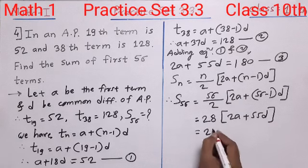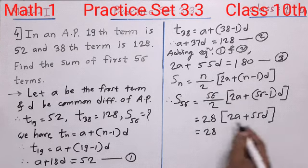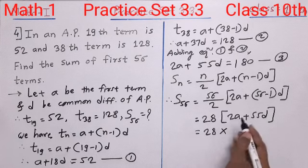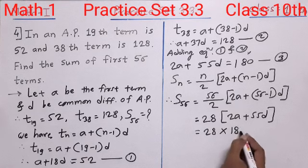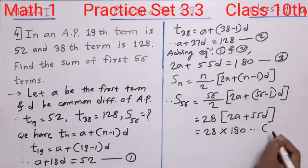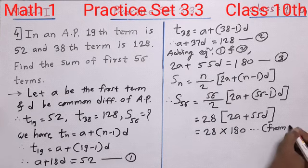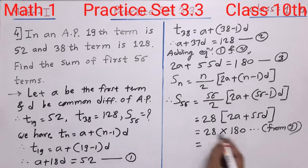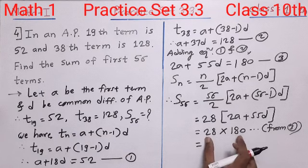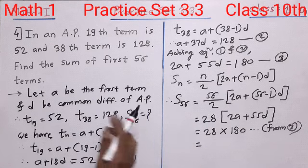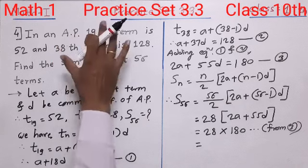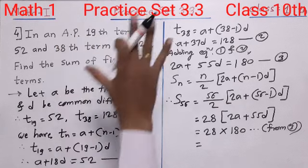28 will remain as is. The bracket is multiplied, so we write 28 multiplied by the value of 2A plus 55D. From equation 3, that value is 180. Now let us do the multiplication. Once we do the multiplication, we get the final answer, which is the sum of the first 56 terms.